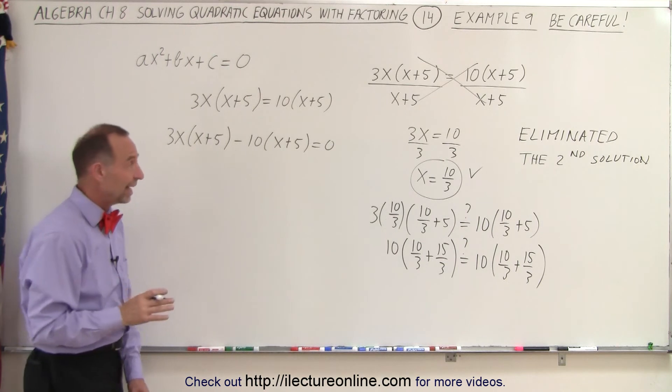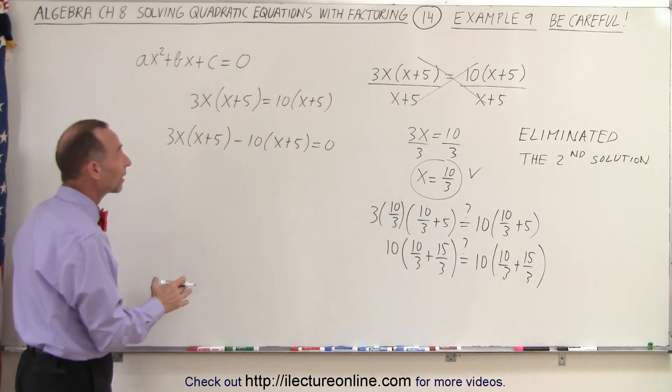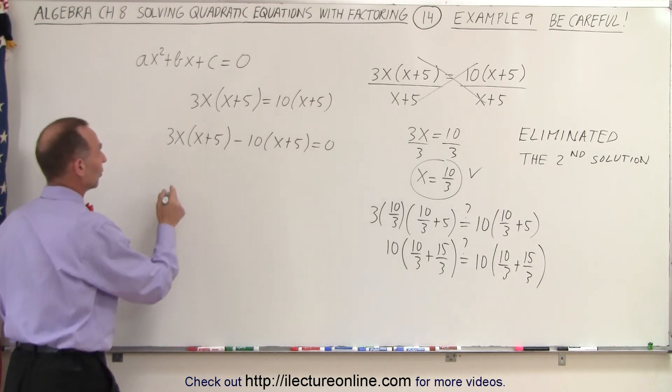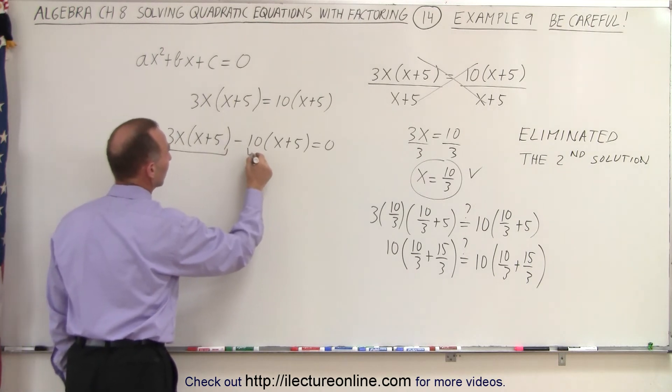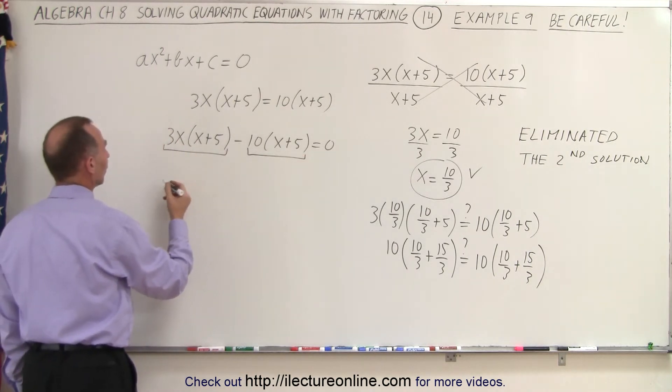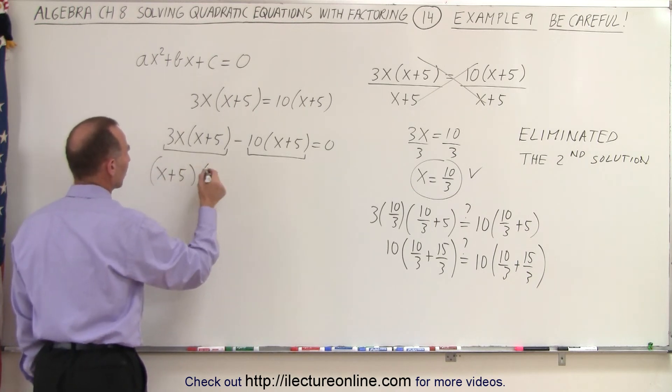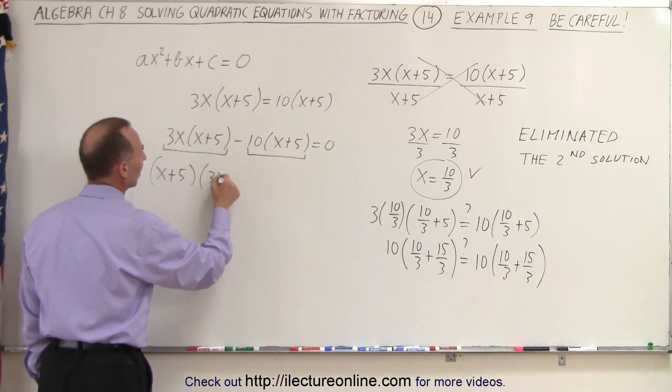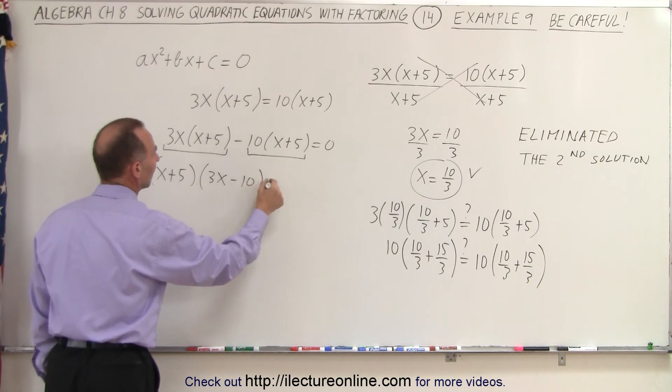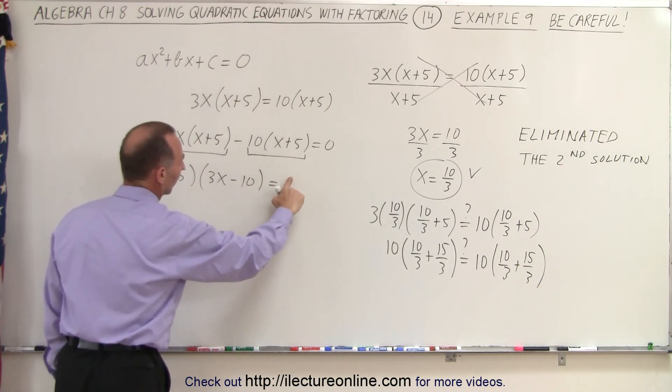Now what I can do instead, instead of eliminating things, I can factor out a common factor. So the common factor here and here would be x plus 5. So this gives me x plus 5 times what's remaining. Here we have a 3x and here we have a minus 10. Equals not 1 but 0.